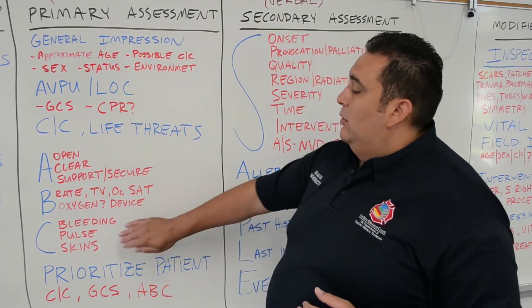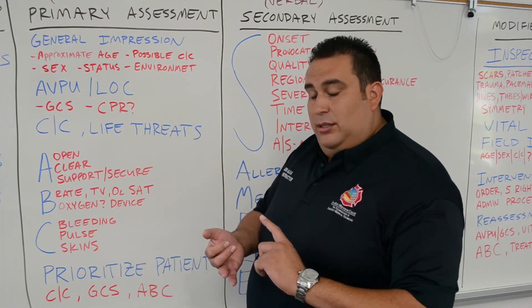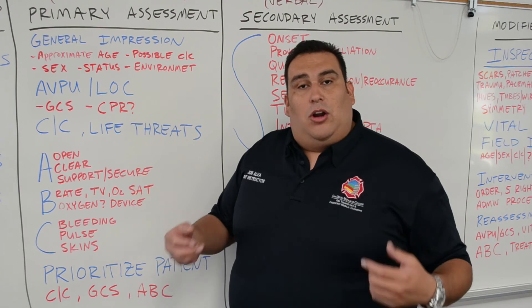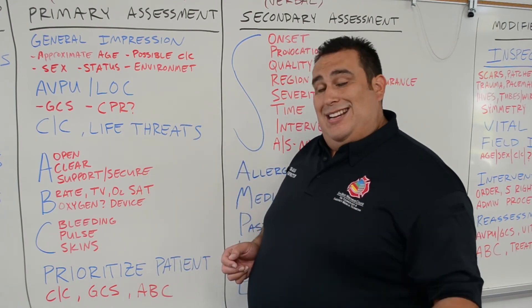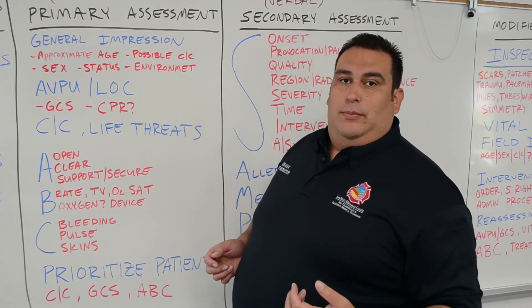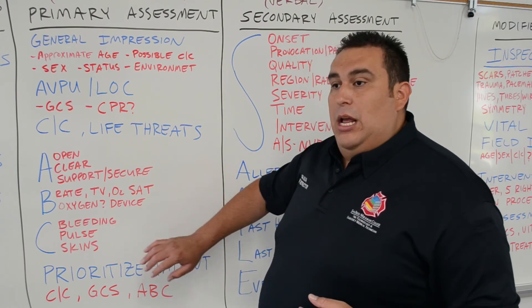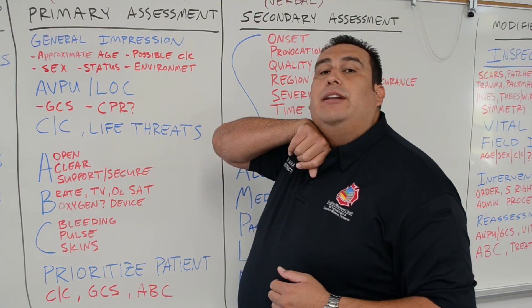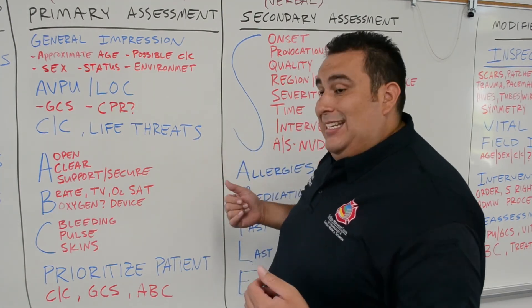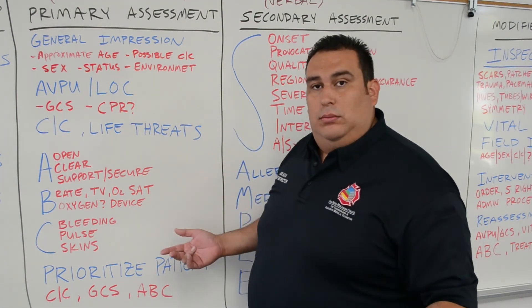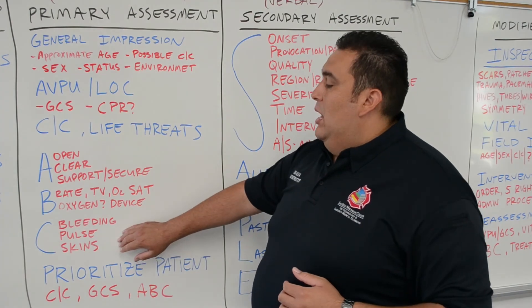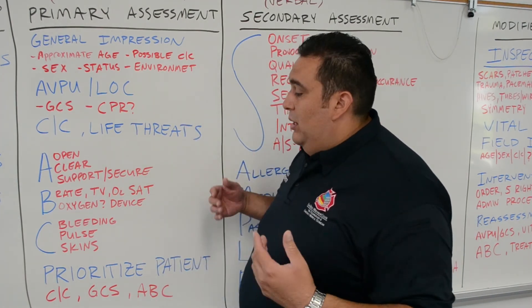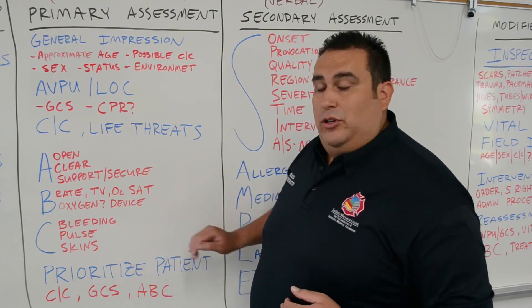When checking skin, assess color, temperature, and condition. For color — are they pale, flushed, cyanotic, or jaundiced? For temperature, use the back of your hand to the forehead or neck — is it warm, hot, cool, or cold? For condition — are they very dry, diaphoretic, or moist?